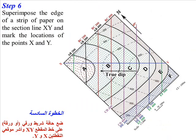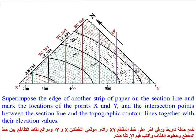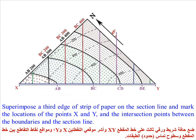Step 6. Superimpose the edge of a strip of paper on the section line X, Y and mark the locations of the points X and Y. Write three strike line values for each boundary. Superimpose the edge of another strip of paper on the section line and mark the locations of X and Y and the intersection points between the section line and the topographic contour lines. Superimpose a third strip of paper on the section line and mark the intersection points between the boundaries and the section line.